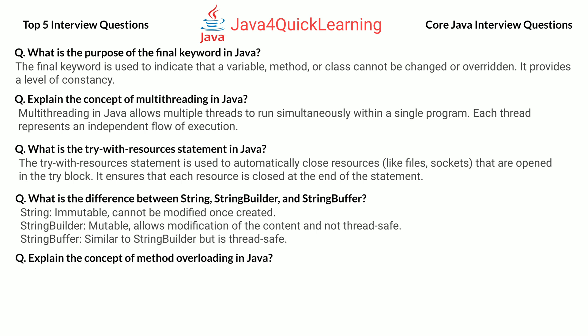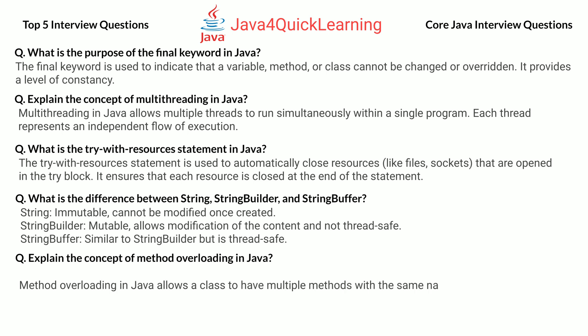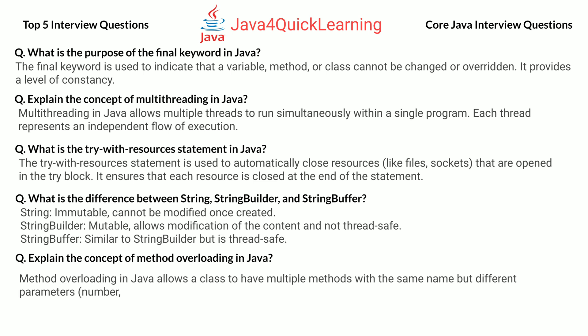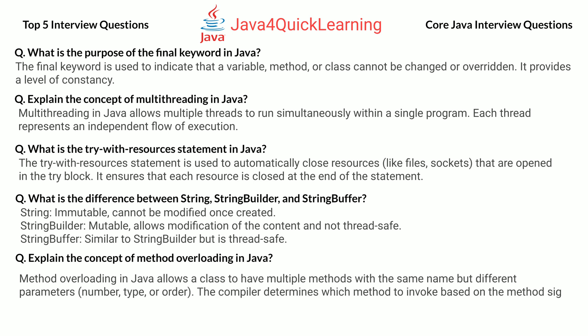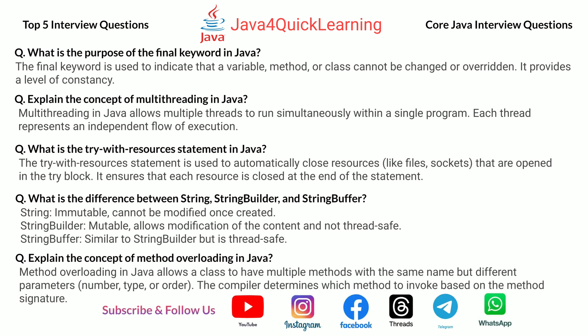Explain the concept of method overloading in Java. Method overloading in Java allows a class to have multiple methods with the same name but different parameters — in number, type, or order. The compiler determines which method to invoke based on the method signature.